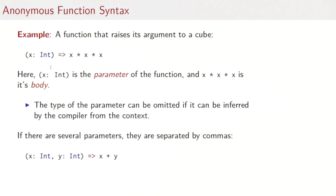In fact, the type of the parameter can be omitted if the compiler can infer it from the context. And if you have several parameters, you can write them in a list separated by commas. For instance, that function here would be the summation function. It would take two integers, x and y, and give you the sum of x and y.